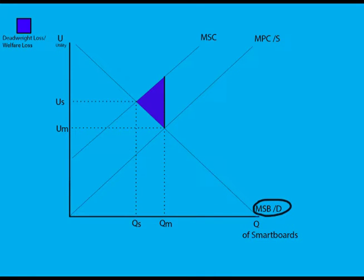As you can see, the marginal social benefit line is sloping downwards because the use of smart boards in classrooms is not well received by students and teachers, thus decreasing utility.